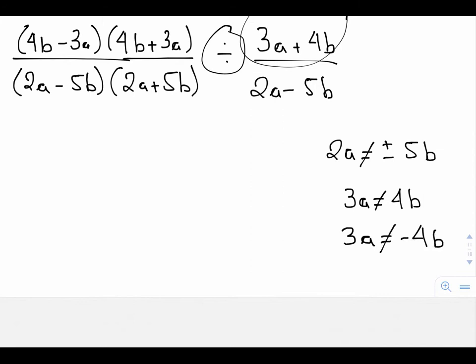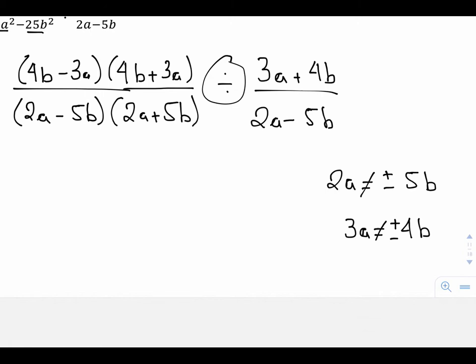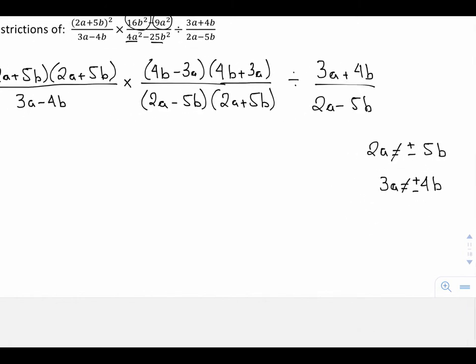And again, these two together, instead of writing 3a not equal to negative 4b, I can write it more compactly and just say 3a is not equal to positive or negative 4b, just like the one above. So we actually have four restrictions on our denominators and eventual denominator.